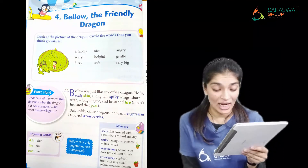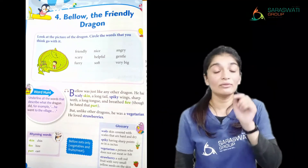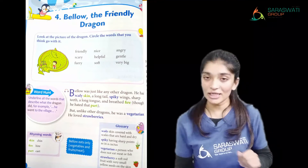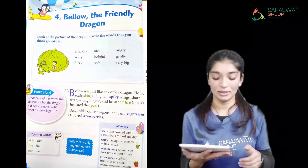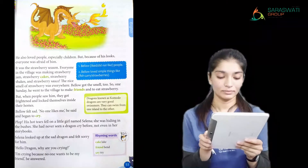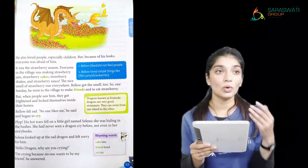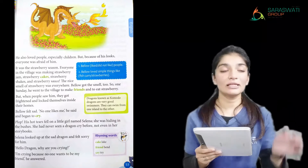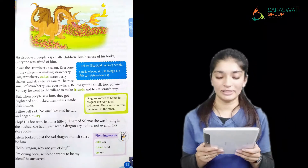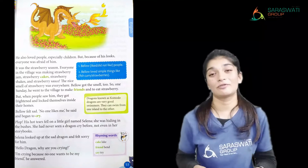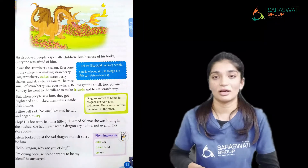But unlike other dragons, he was a vegetarian. This dragon loved strawberries. He also loved people — especially children. Children were his most favorite. But because of his looks, everyone was afraid of him. Everyone stayed far away from him.